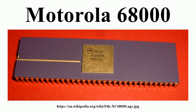The 68000 grew out of the MACSS project, begun in 1976 to develop an entirely new architecture without backward compatibility. It would be a higher-power sibling complementing the existing 8-bit 6800 line rather than a compatible successor. In the end, the 68000 did retain a bus protocol compatibility mode for existing 6800 peripheral devices, and a version with an 8-bit data bus was produced. However, the designers mainly focused on forward compatibility, which gave the 68000 platform a head start against later 32-bit instruction set architectures.